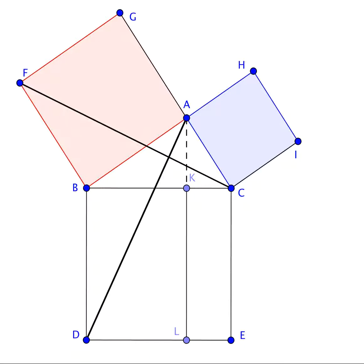The angles CAB and BAG are both right angles. Therefore, C, A, and G are collinear. Similarly for B, A, H.